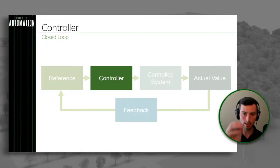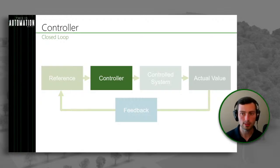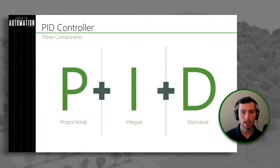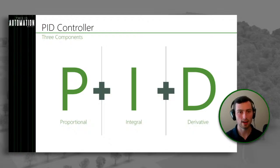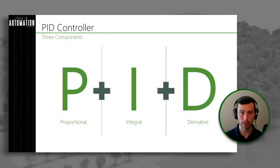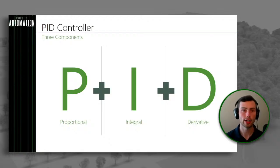The most common way we see that done in the context of a controller is with PID. When we're talking about PID, it's going to be sitting inside of this controller block in our block diagram — for example, inside the thermostat. PID is really three independent components that are added together. PID stands for proportional, integral, derivative. We're not going to talk about any of the math today — we're going to keep it high level and explain what these things mean and how they change the control.